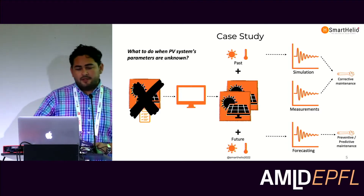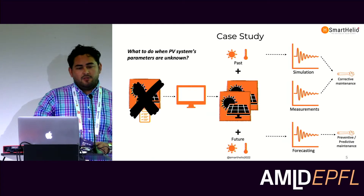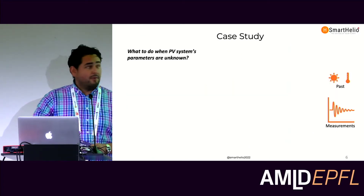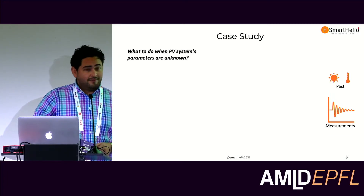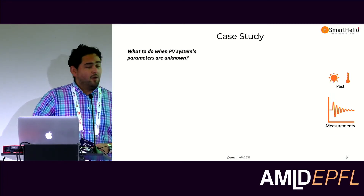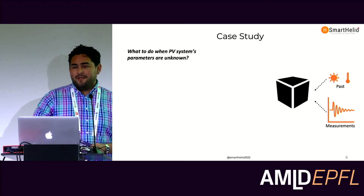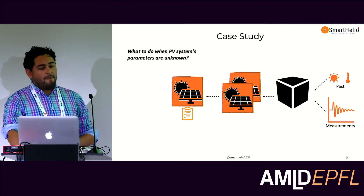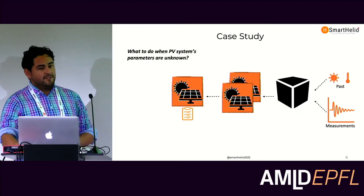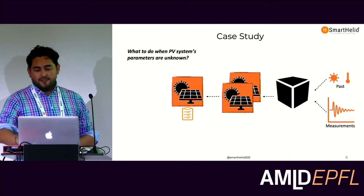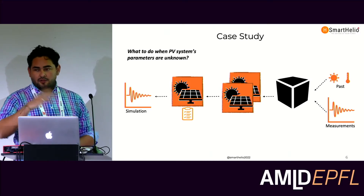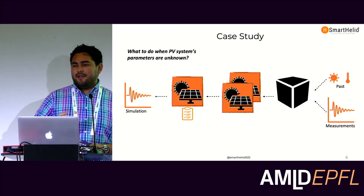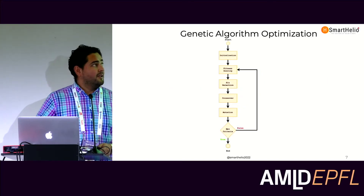But what happens when we don't have these characteristics? This is a real question. So we start from backwards: we have past weather data and we have the measurements, and we need something to create a digital twin. From this digital twin, we extract the characteristics and use the same simulation software. In this case, we chose genetic algorithms to solve this problem.